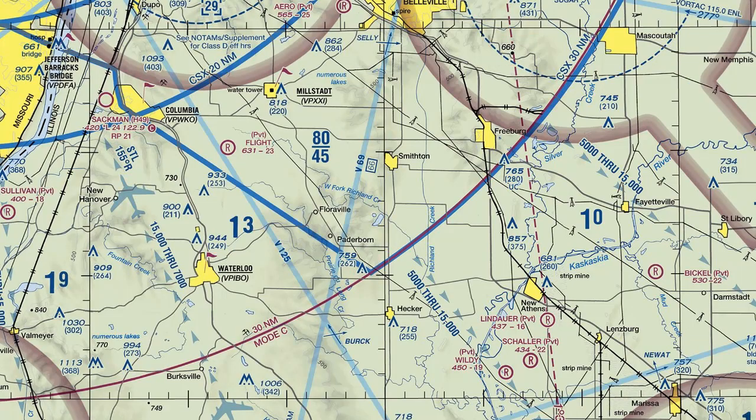Each quadrangle also has a maximum elevation number, shown as a two-digit blue number, which represents the highest obstacle for each quadrangle — whether it is man-made or natural — in hundreds of feet, but with some padding built in so that the obstacle is actually lower than the figure seen on the chart.